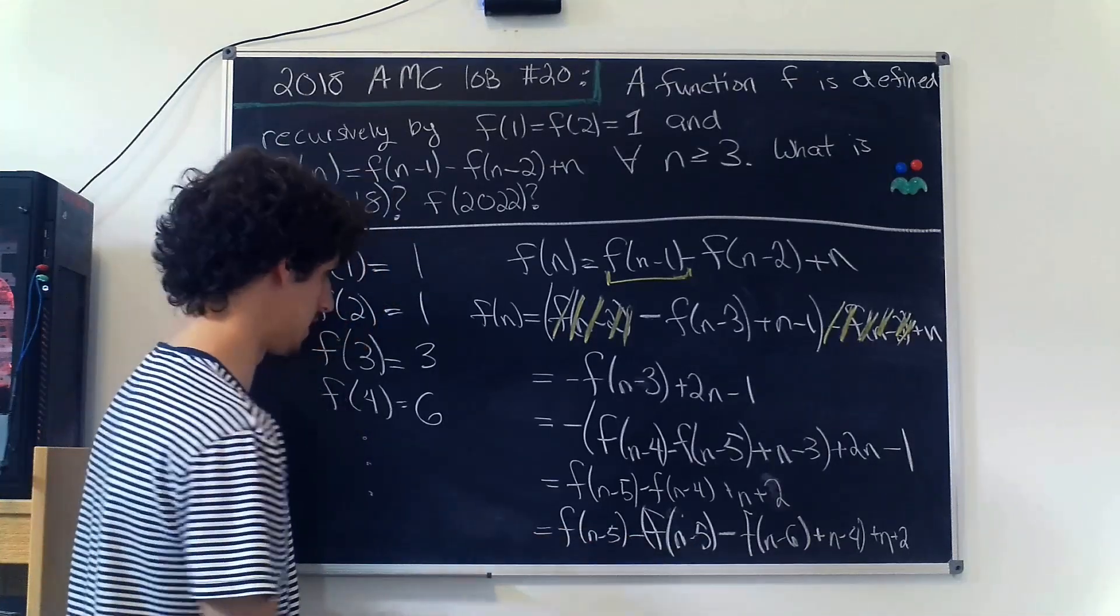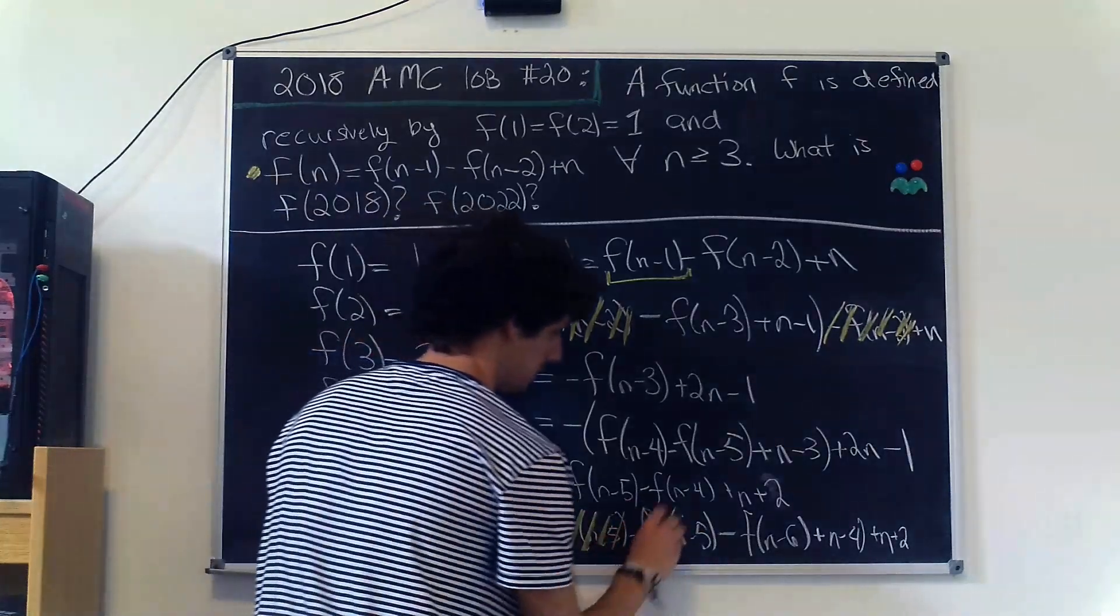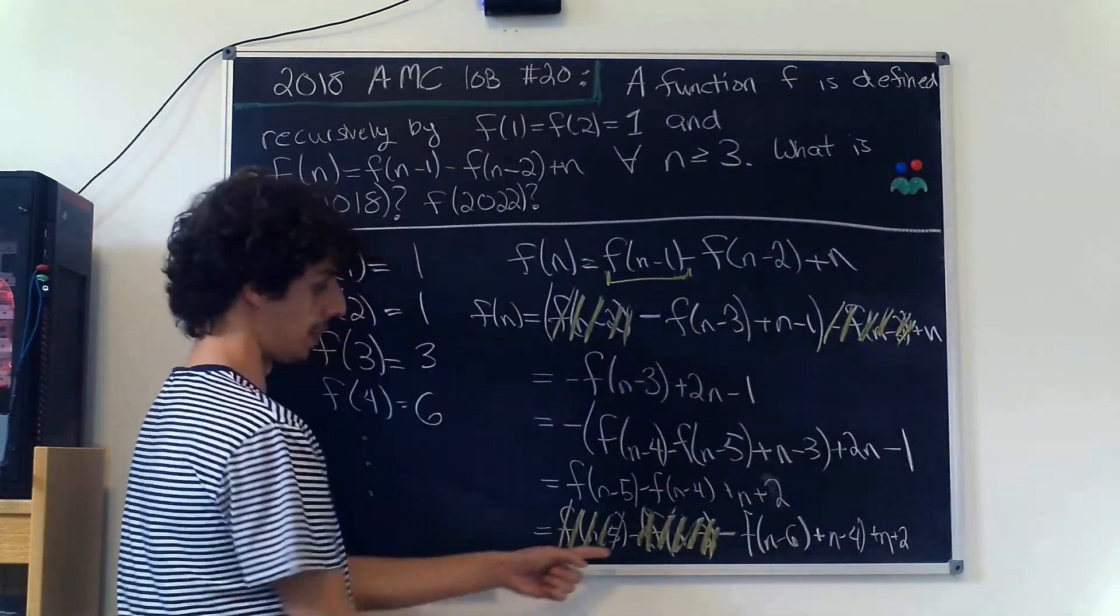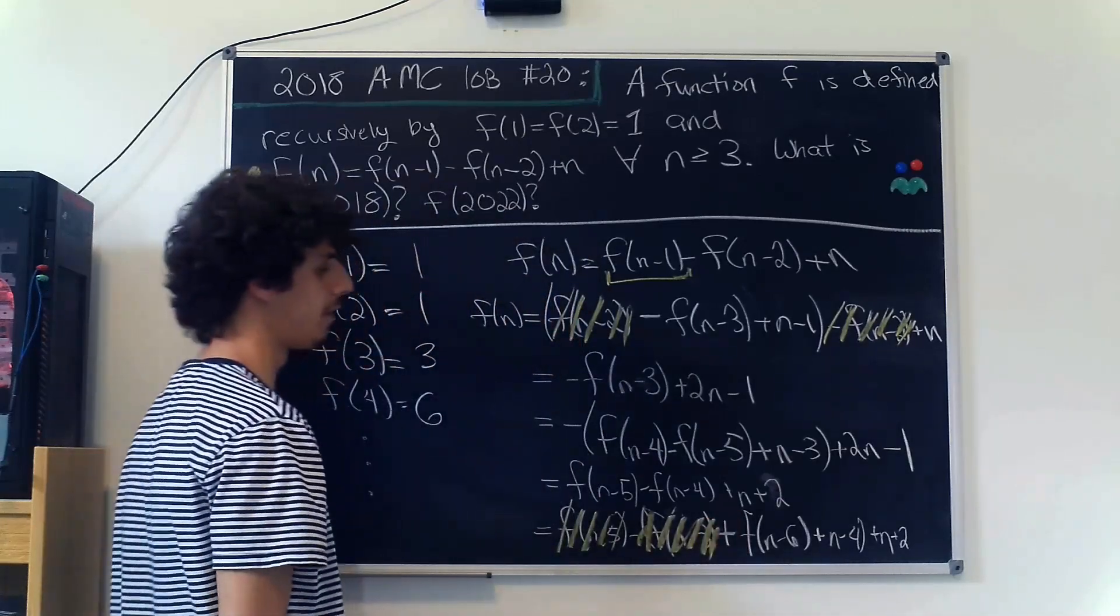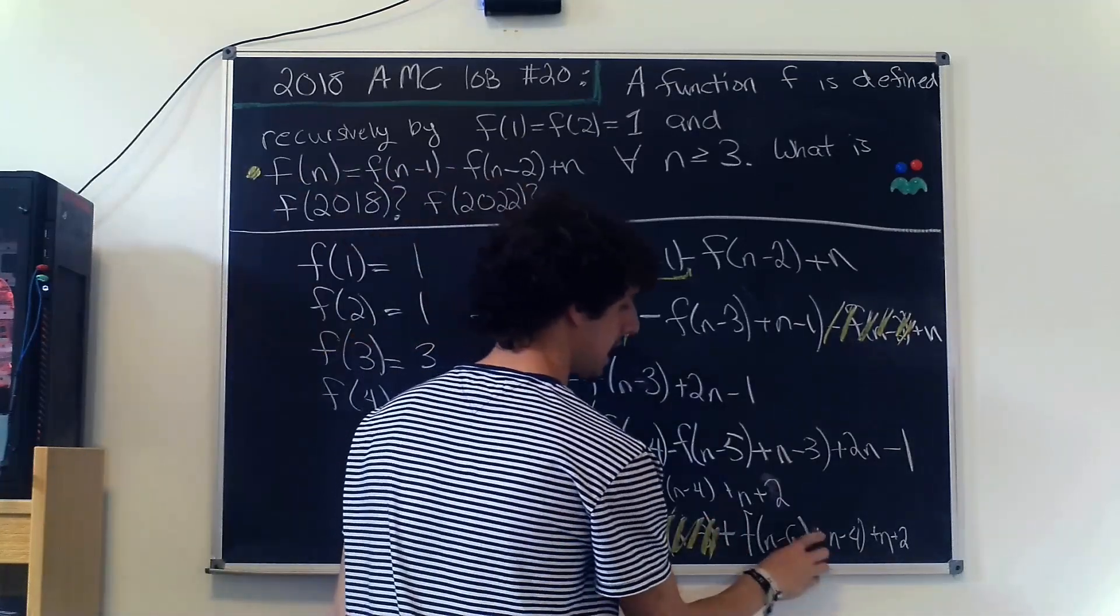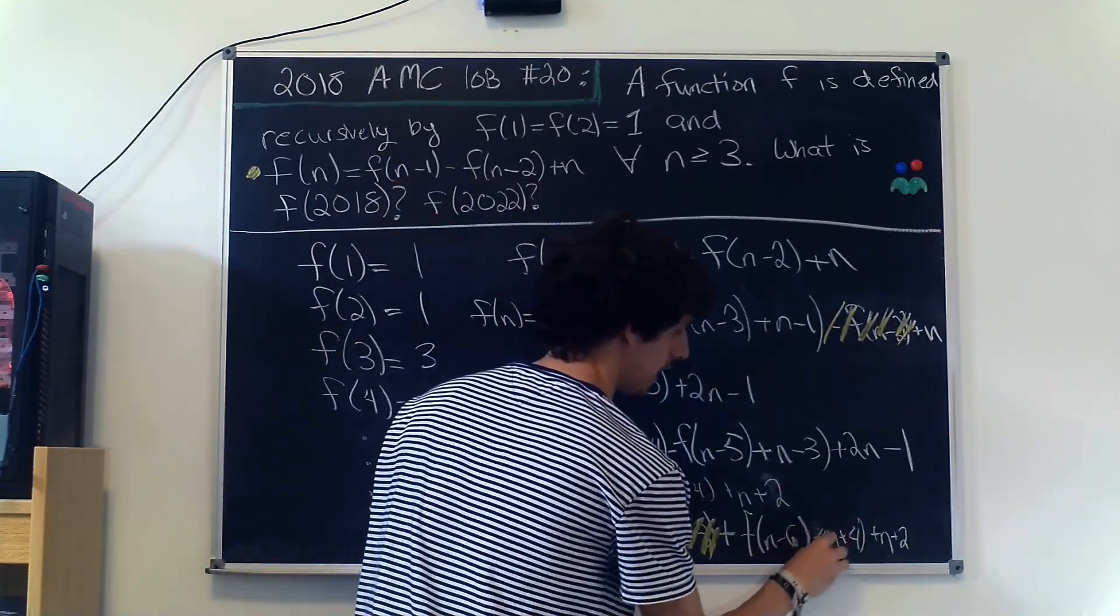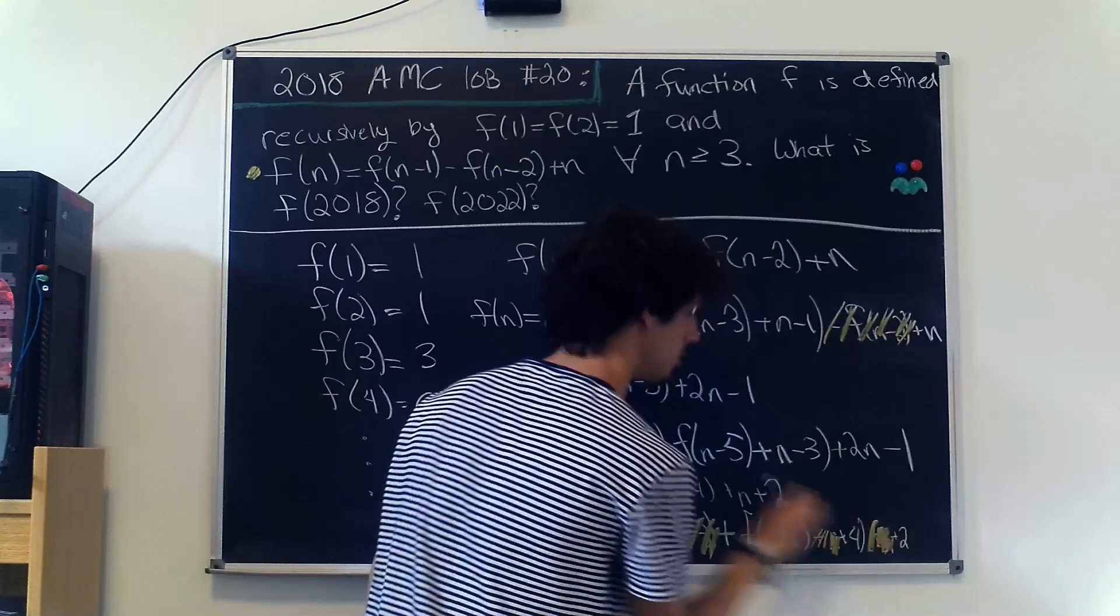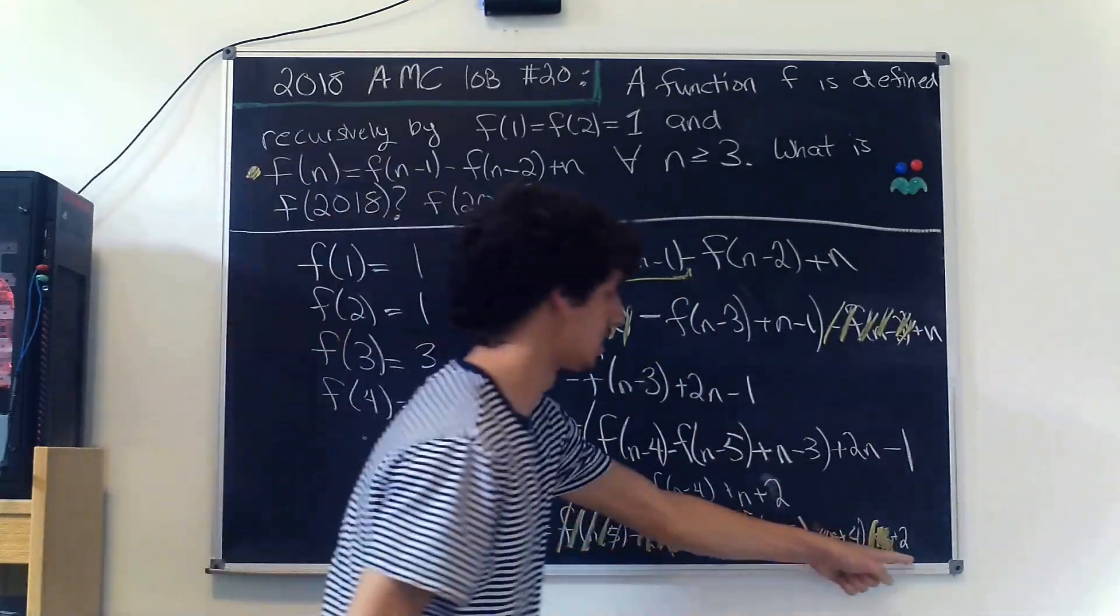But now we can simplify this because this f(n-5) cancels with this negative f(n-5). Then this minus outside multiplies through, so this becomes positive f(n-6). This becomes negative n and this becomes positive 4. But now the negative n and the positive n cancel each other there, so we're just left with f(n-6) plus 2.